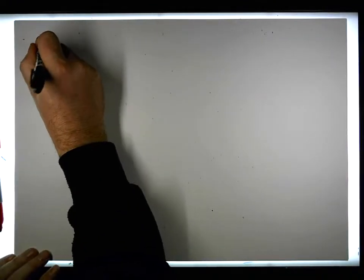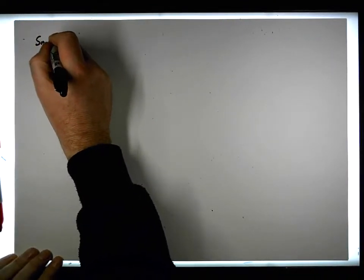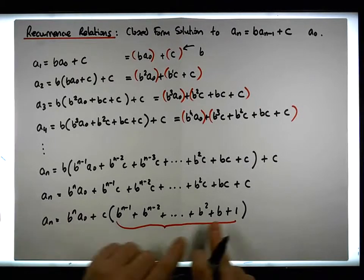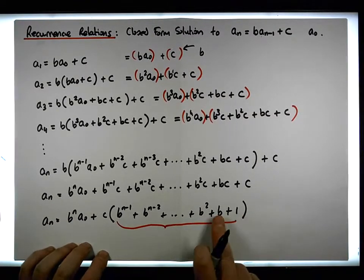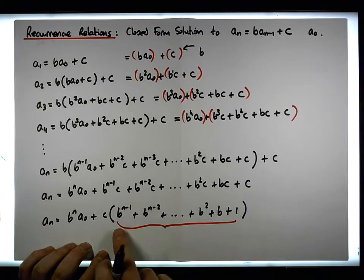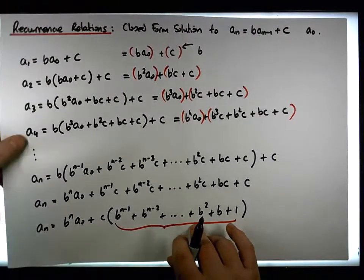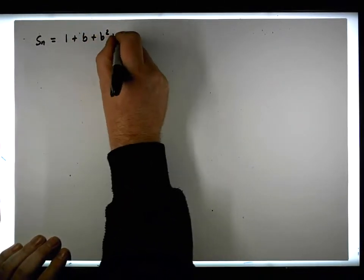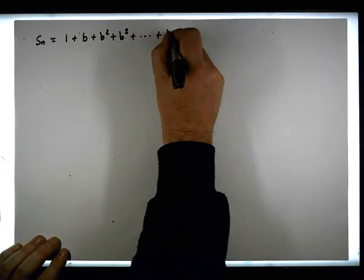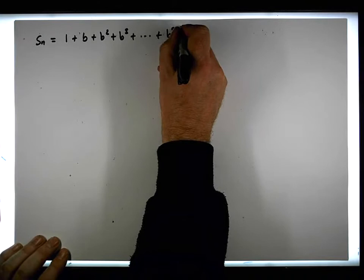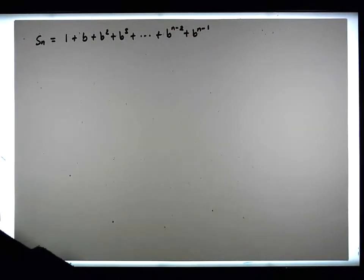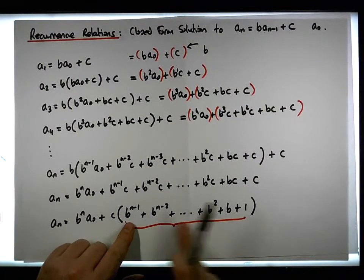Let's call the series S_n. I'm going to reorder the terms starting with 1, followed by b, b-squared, b-cubed, all the way up to b to the n minus 2, then b to the n minus 1. So S_n equals 1 plus b plus b-squared plus b-cubed, plus all the way through to b to the n minus 2, plus b to the n minus 1. That's the power series that appears as part of the nth term.